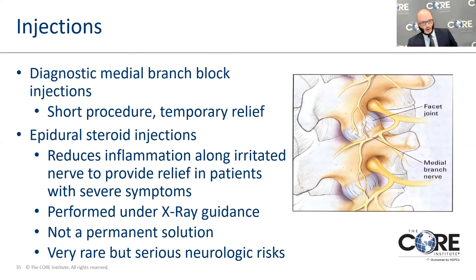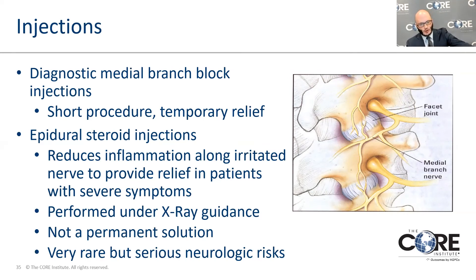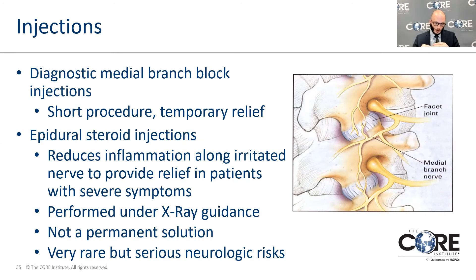Injections are another option for the cervical spine. Medial branch blocks and injections target the facet joints in the back of the spine — a short procedure that can provide temporary relief. If this is found to be the primary mediator of pain, ablations can be performed — a more permanent burning of the nerve. Epidural steroid injections reduce inflammation along irritated nerves. This is like a direct delivery system, having medicine injected by the nerves under imaging guidance. It's not a permanent solution in the sense that it doesn't change the anatomy — only surgery changes the anatomy — but it can provide symptomatic relief as your body heals and can save people from surgical intervention.